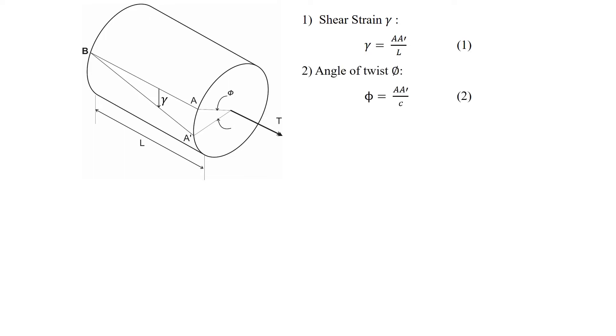The angle of twist, phi, will be phi equals the displacement from point A to point A prime by the radius of the shaft. Equating equations one and two, the formula shear strain can be written as shown.